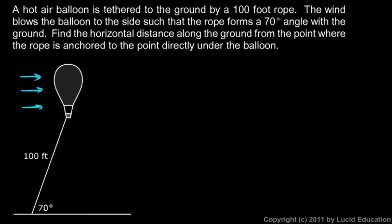The rope forms a 70-degree angle with the ground. We're told to find the horizontal distance along the ground from the point where the rope is anchored to the point directly under the balloon. So if we draw a line straight down here, we're trying to find this distance here. That's what we're looking for, so let's mark that and give it a name. We'll just call it x.